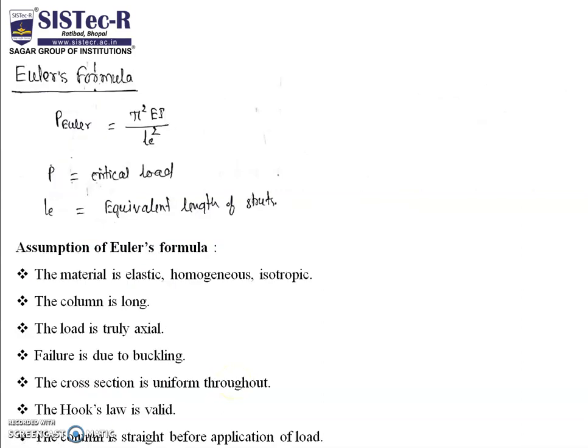That is Euler's formula: Pe equals pi squared E divided by Le squared. Pe is the critical load, that is the maximum load. Le is the equivalent length of the strut or column.